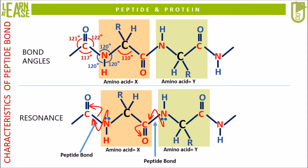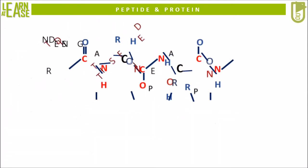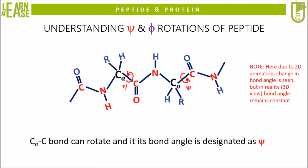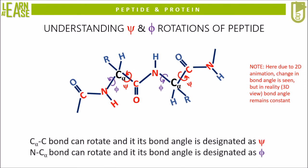Before understanding the secondary structure of protein, let us first understand the psi and phi rotations that can occur in a peptide. The bond that occurs between the alpha carbon and the carbon participating in the peptide bond can rotate clockwise or anticlockwise, and it is denoted by psi rotation. Also, the bond between the nitrogen participating in the peptide bond and the alpha carbon can rotate clockwise or anticlockwise, and it is denoted by phi rotation.